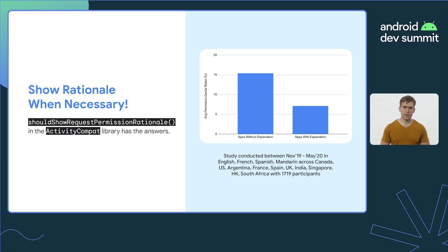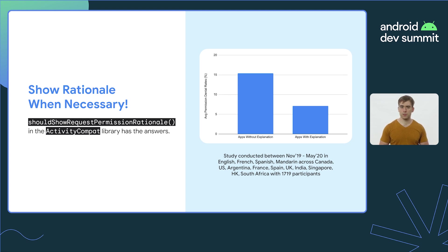Sometimes it may be necessary to inform the user explicitly about how your app uses permissions. To facilitate this, the Android platform provides the shouldShowRequestPermissionRationale API within ActivityCompat. If this method returns true, it's recommended to display additional information about why the permission is required before showing a permission request again. This is especially critical if your permission usage may not be immediately apparent to the user.